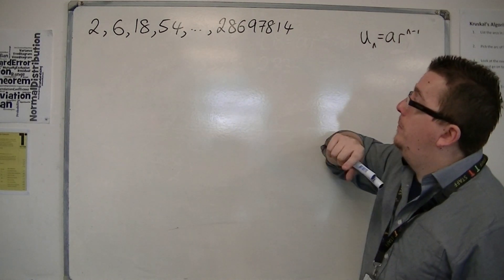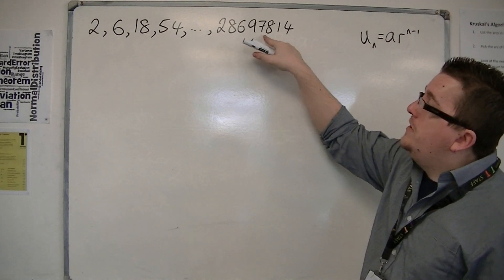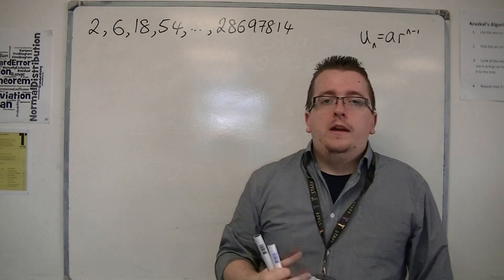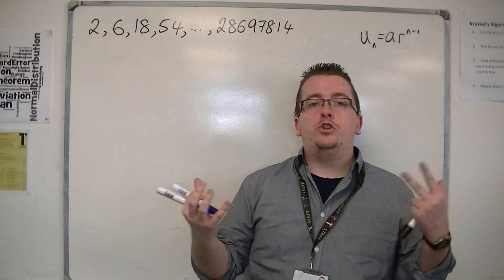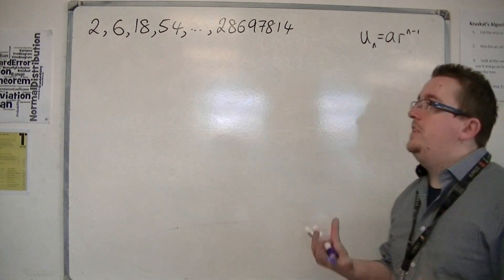and then the last number is 28697814. And what I want to do is I want to determine how many numbers are actually in the sequence. How many terms are there?